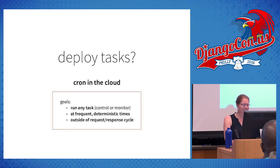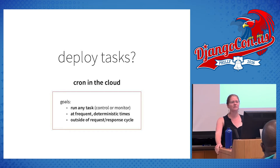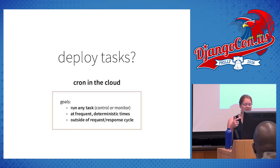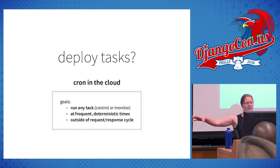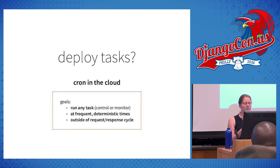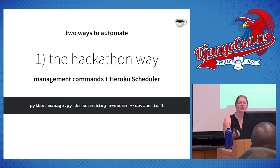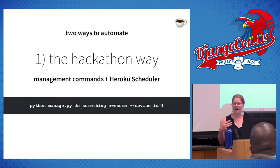So you have models, tasks, and apps — let's deploy. But running a web server isn't actually going to help us here. What we really need is something like the Unix concept of cron or crontabs, but that can run in a distributed cloud environment — something to run our tasks at frequent and deterministic times, outside of the request-response cycle. For the hackathon way, I'm using a Heroku add-on called Scheduler, and we'll use that to run management commands. You're already familiar with Django management commands like makemigrations or runserver, and you can write your own — there's boilerplate in the Django docs. We'll have a simple management command that wraps the tasks we already have.